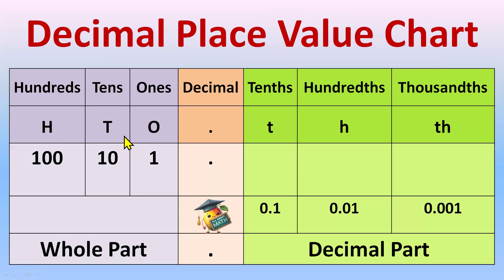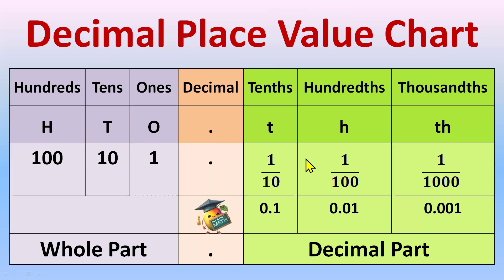Before the decimal, which is the whole part, we have already done the place value chart for that: 1s, 10s, 100s. And for the decimal part, it starts with tenths, hundredths, thousandths. Tenths means denominator 10, hundredths means denominator 100, and thousandths means 1 by 1000 — denominator 1000. In decimal form we can write 0.1, 0.01, 0.001. This is the place value chart of decimals — before decimal is the whole part, after decimal is the decimal part.